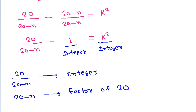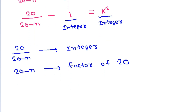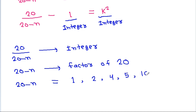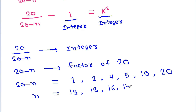So we get that (20 minus n) equals a factor of 20. The factors of 20 are 1, 2, 4, 5, 10, and 20. So n will be equal to 19, 18, 16, 15, 10, and 0.